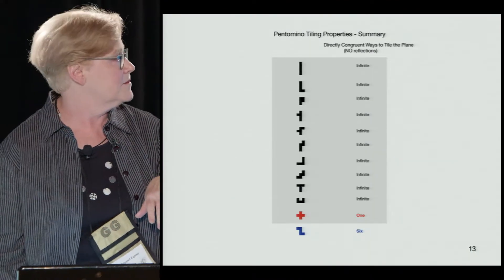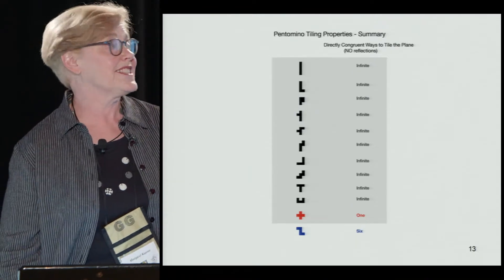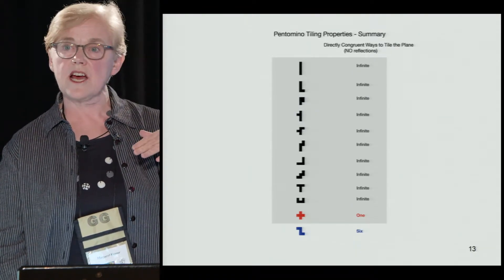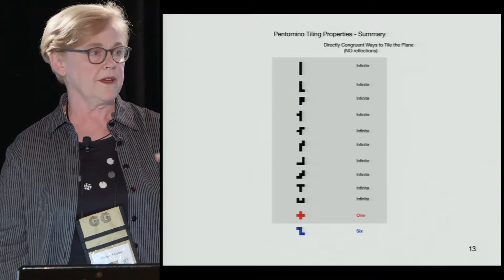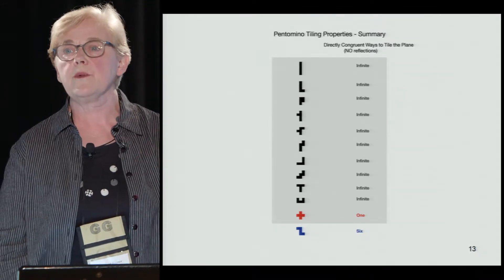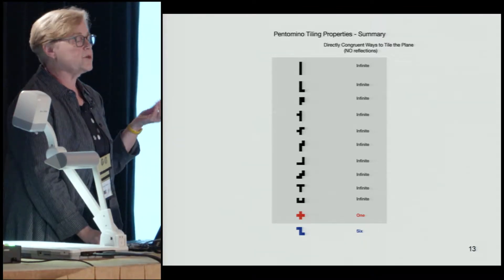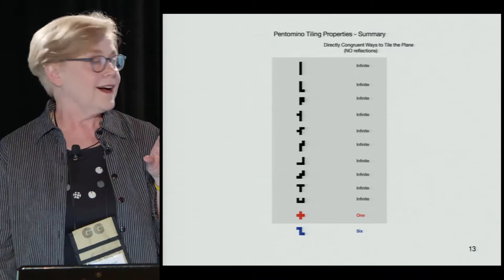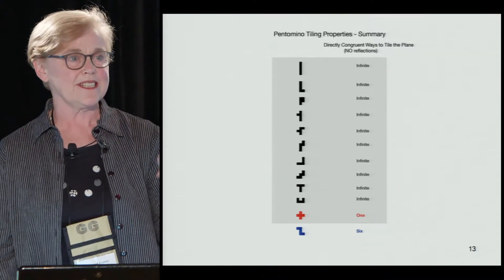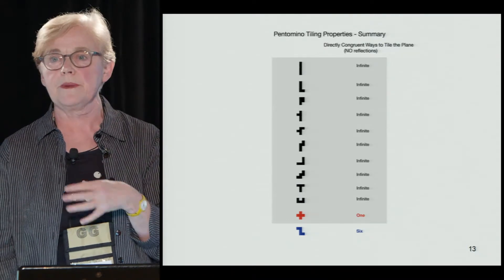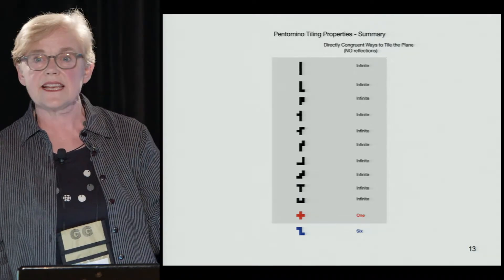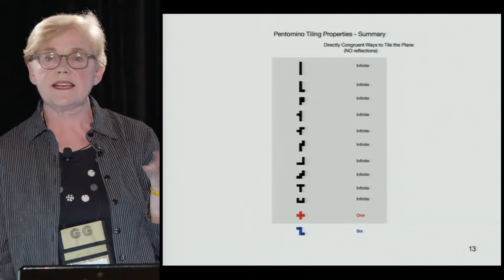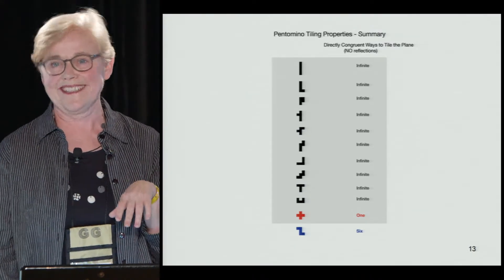There's a little table summarizing my investigations. The first 10 tile in an infinite number of ways, we have the X tiling in one way, and we have the Z tiling in six ways. This is when I had my own personal moment of zen. I said, 'Wow, six patterns - that's something I can wrap my head around. Maybe that would make a good composition.' Besides, six is half of 12, and Z is a really nice shape.